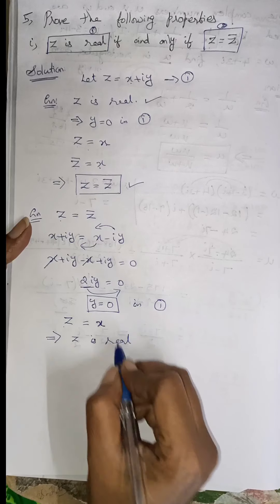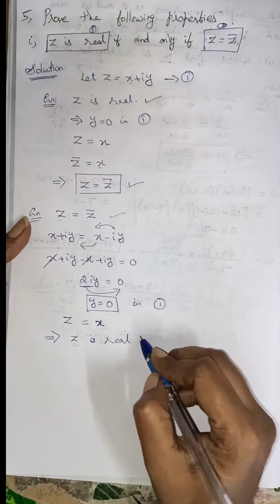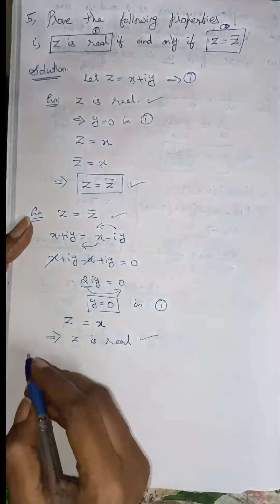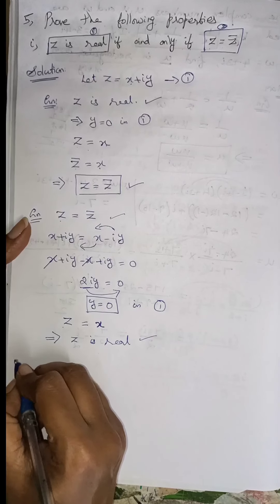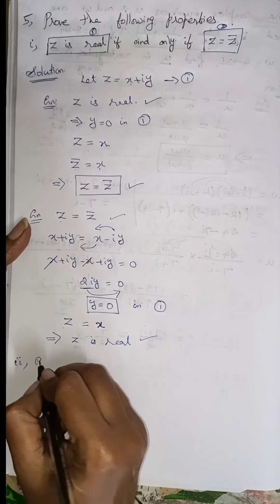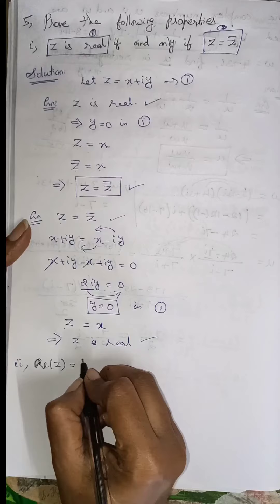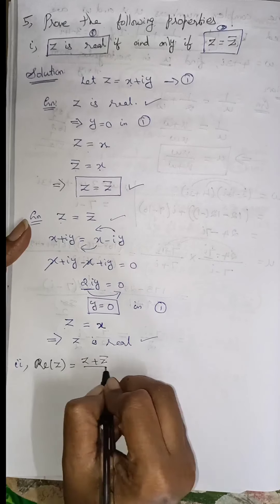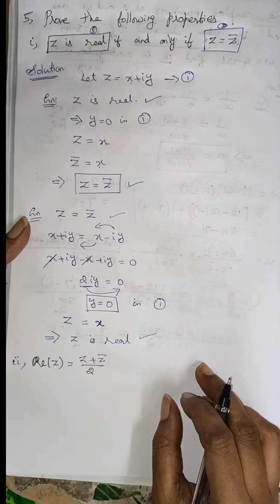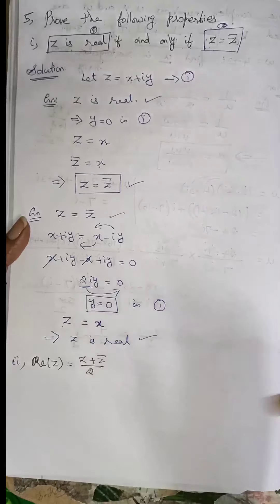Substituting Y equals 0, Z equals X, and since X is real, Z is real. So this completes the second condition proof. In the second subdivision: the real part of Z equals Z plus Z bar divided by 2, and the imaginary part of Z equals Z minus Z bar divided by 2i.